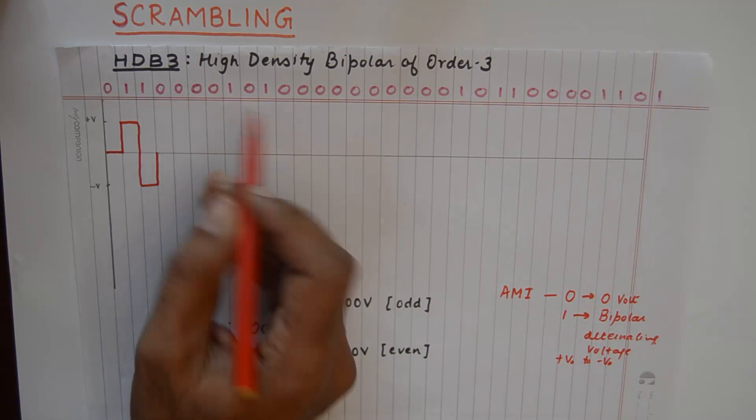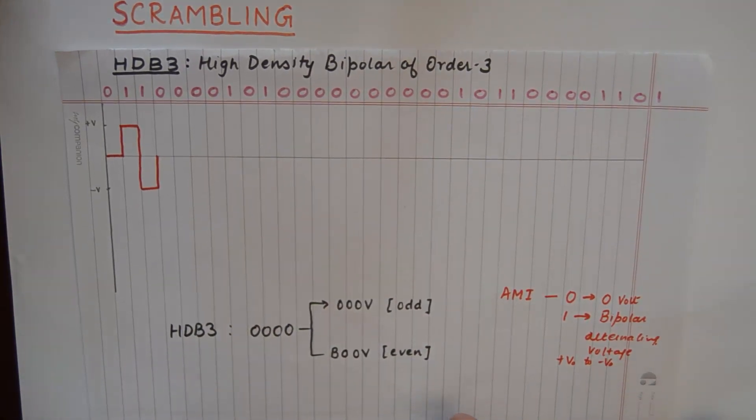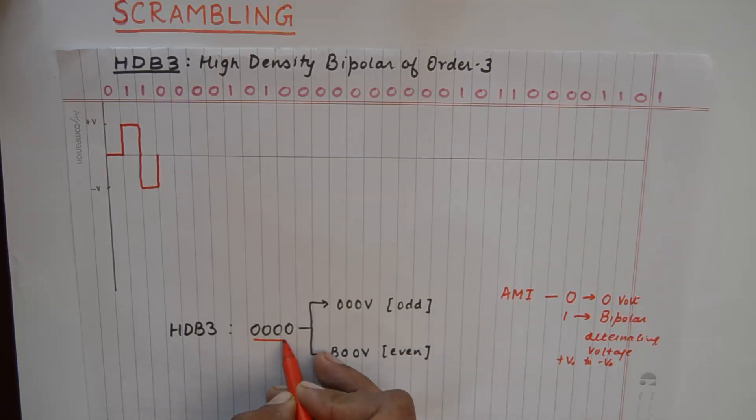Now what happens is we have four zeros. Now we need to make a decision as to how we need to represent it. So in HDB3 you need to remember this formula. Now 0000, four zeros in a line code will be altered to either 000V or B00V depending upon how many number of ones were there before you started to encode this.